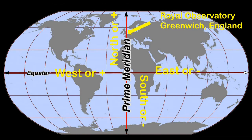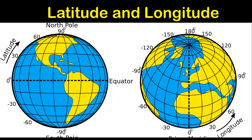Putting the geographical coordinate system together results in lines of latitude and longitude displayed as a grid. By convention, we measure up or down from the equator first, and then east or west from the prime meridian. Positions are always reported as latitude first, longitude second. Using this system, we can precisely report the position of any location on Earth.